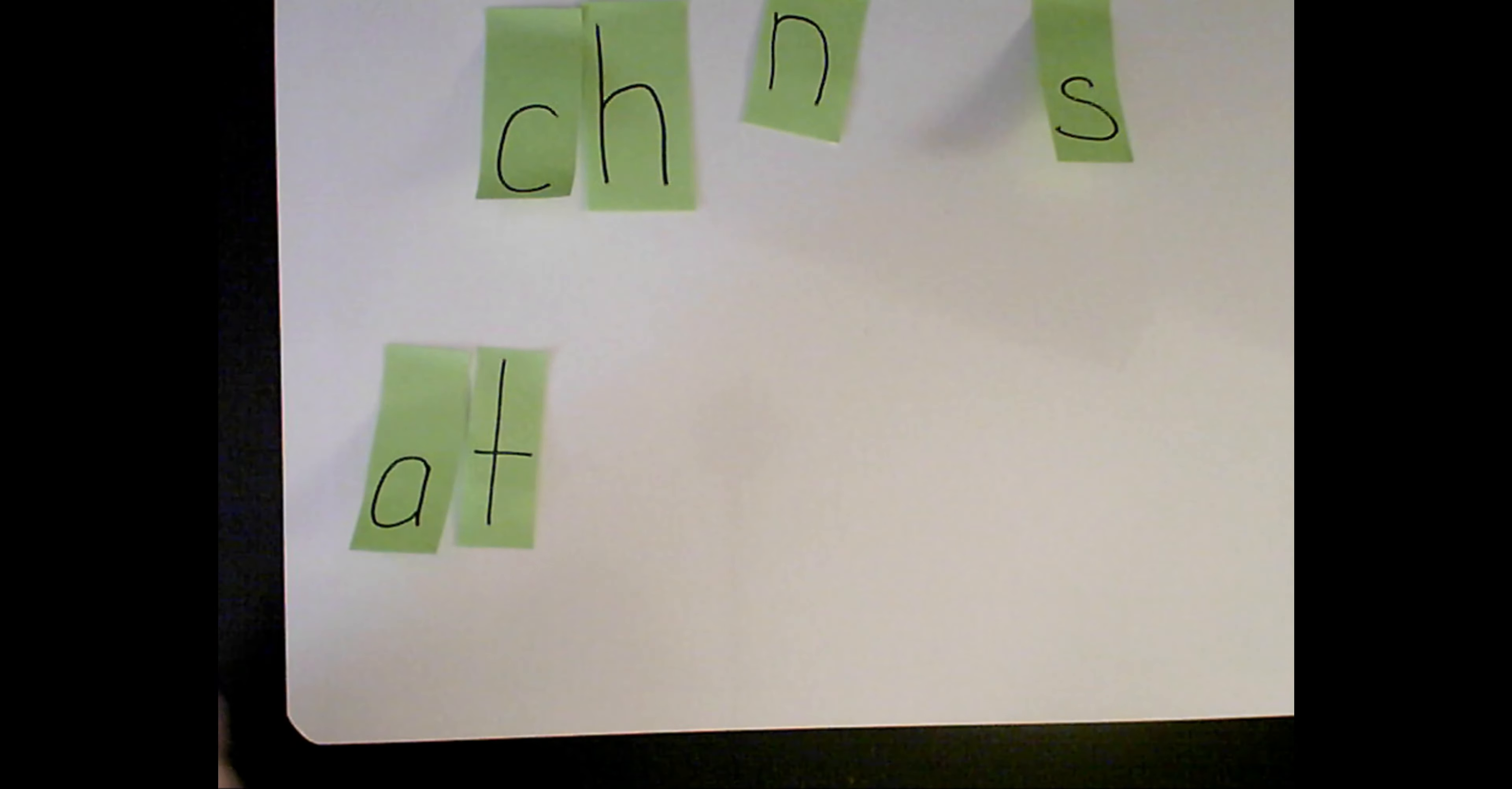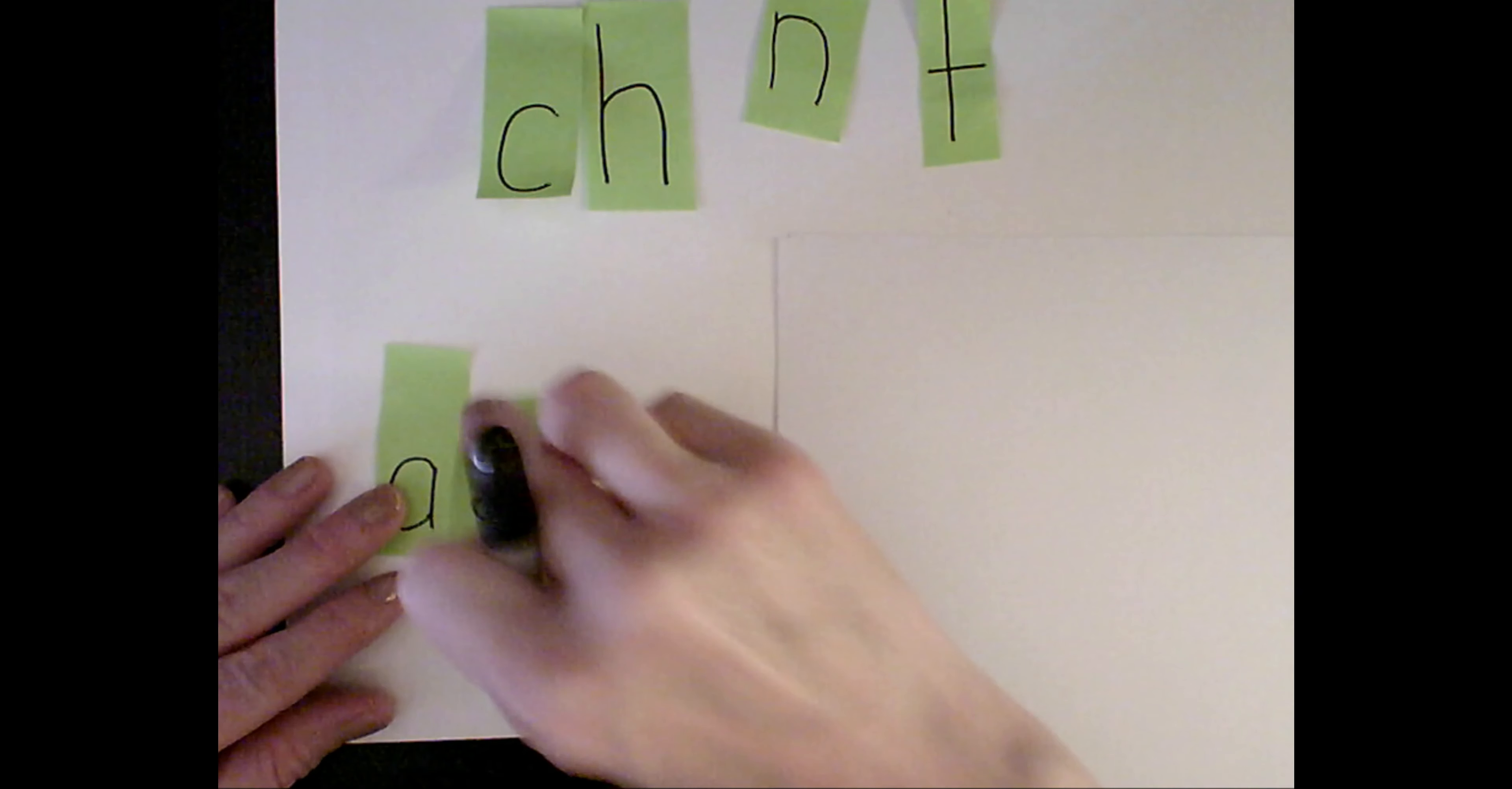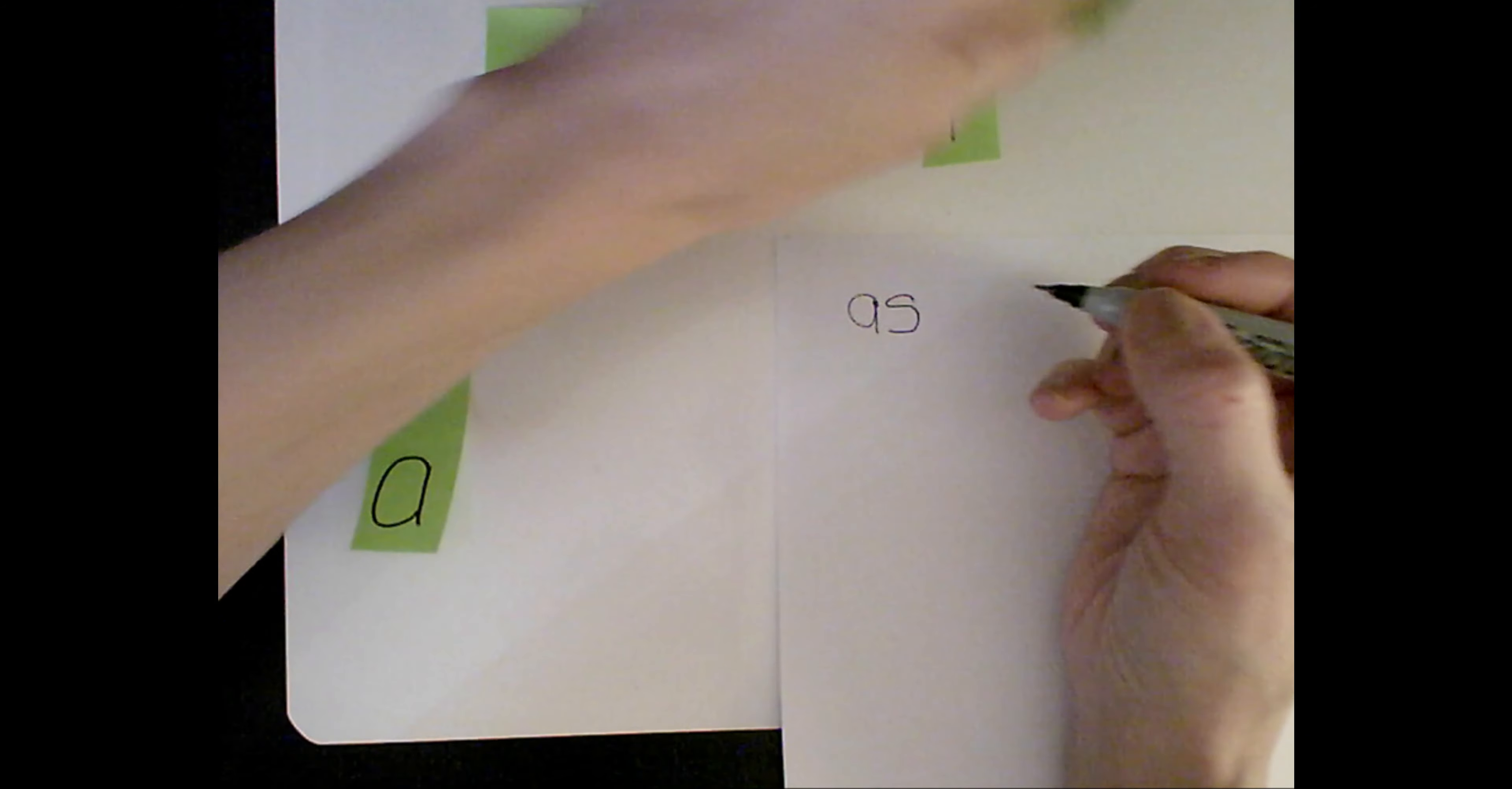Maybe I don't have a whiteboard. Maybe I just have paper. So I can still use something to write down and keep track of the different words that I make as I go along. So I can write the word as.